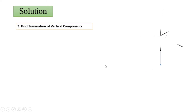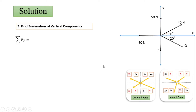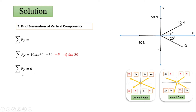Step three: find the summation of vertical components, ΣFy. The 40 N inclined force contributes +40 sin 60° (first quadrant, y is positive). The 50 N force points upward, so it is +50 N. The 30 N force is horizontal, so its vertical component is zero. The force P points downward, so it is −P. The force Q is in the fourth quadrant (y is negative), so its vertical component is −Q sin 20°. Setting ΣFy = 0: 40 sin 60° + 50 − P − 10.649 sin 20° = 0.